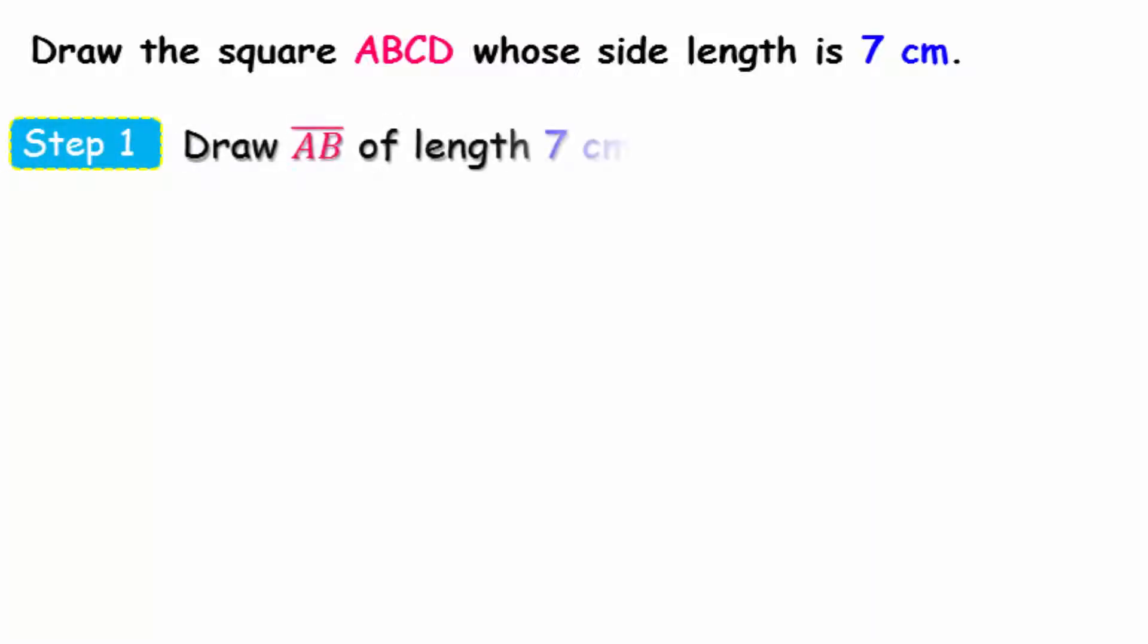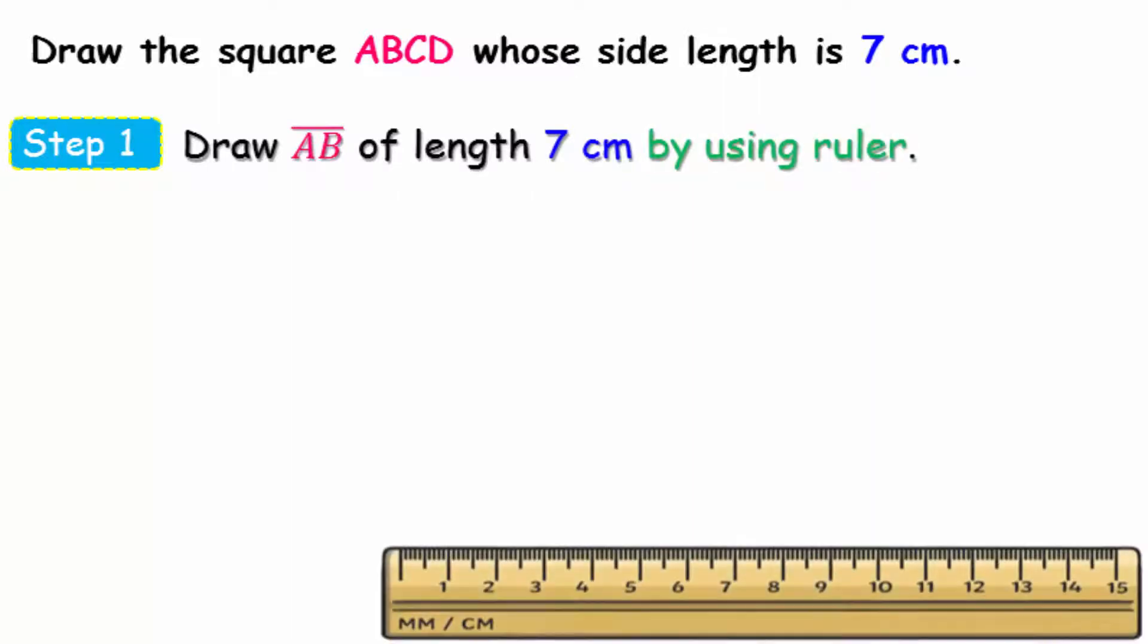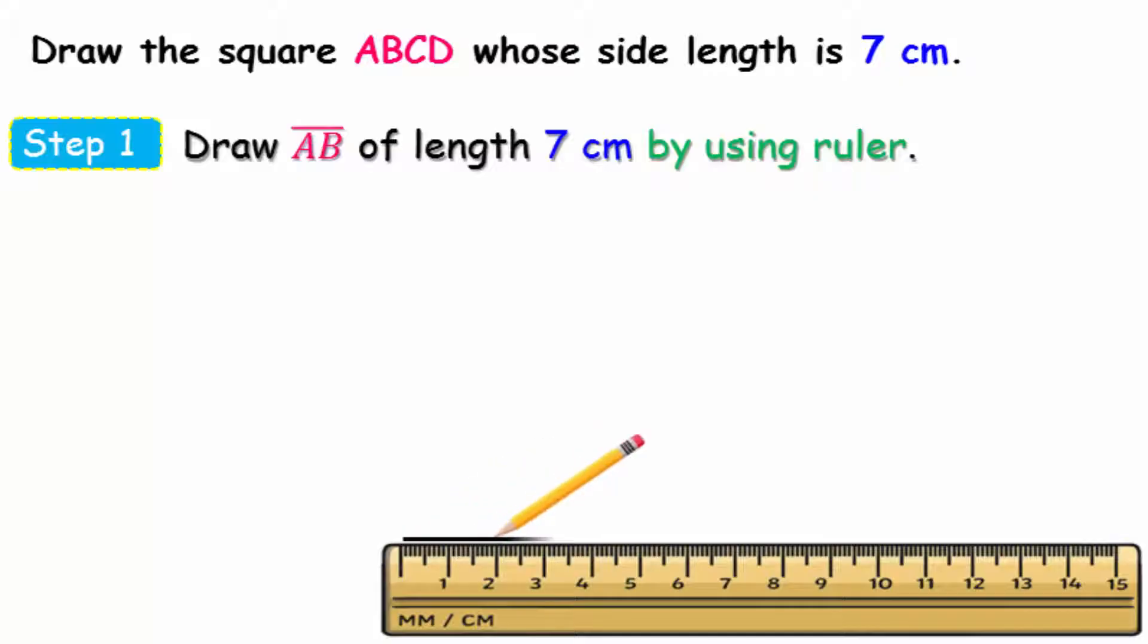AB of length 7 centimeters, of course by using the ruler as you see me now, and don't forget to write the symbols for the straight line.